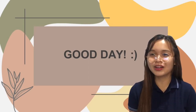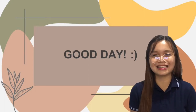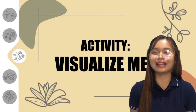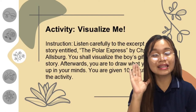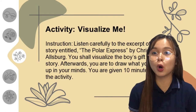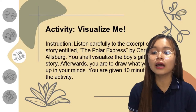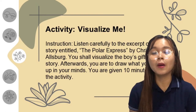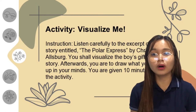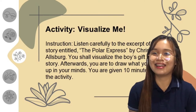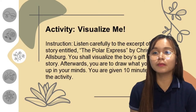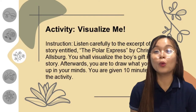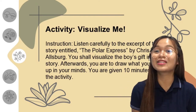And today, we are going to unravel another interesting lesson. But before that, let's have first an activity. This is called Visualize Me. What you are going to do is listen carefully to the excerpt that I am going to read. This is entitled The Polar Express by Chris Van Allsburg. Listen very carefully because you are going to visualize what is the gift that the boy received in the story. You are going to draw the object in your clean sheet of paper with your coloring materials. You can do the activity within 10 minutes, and your 10 minutes starts now.